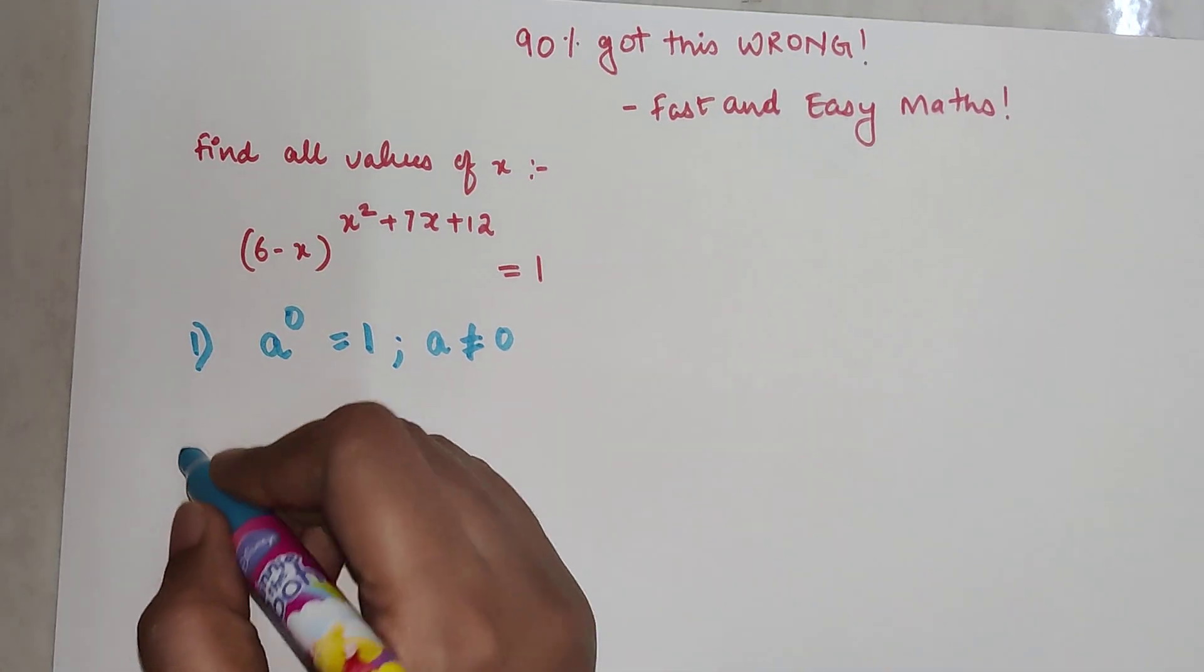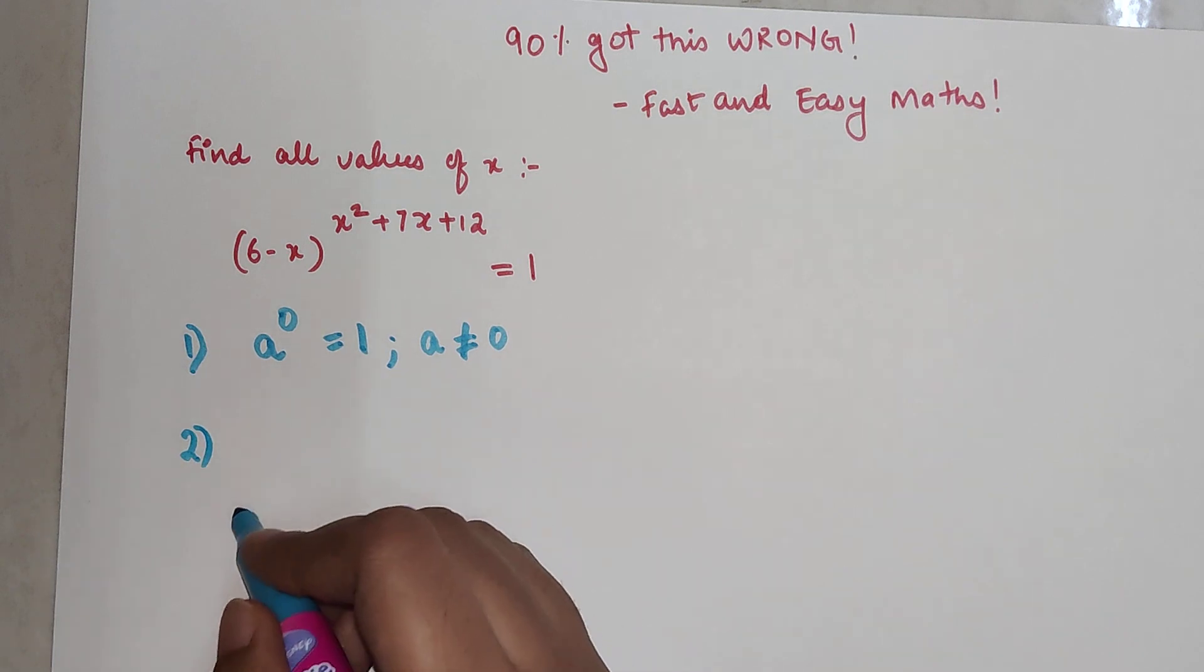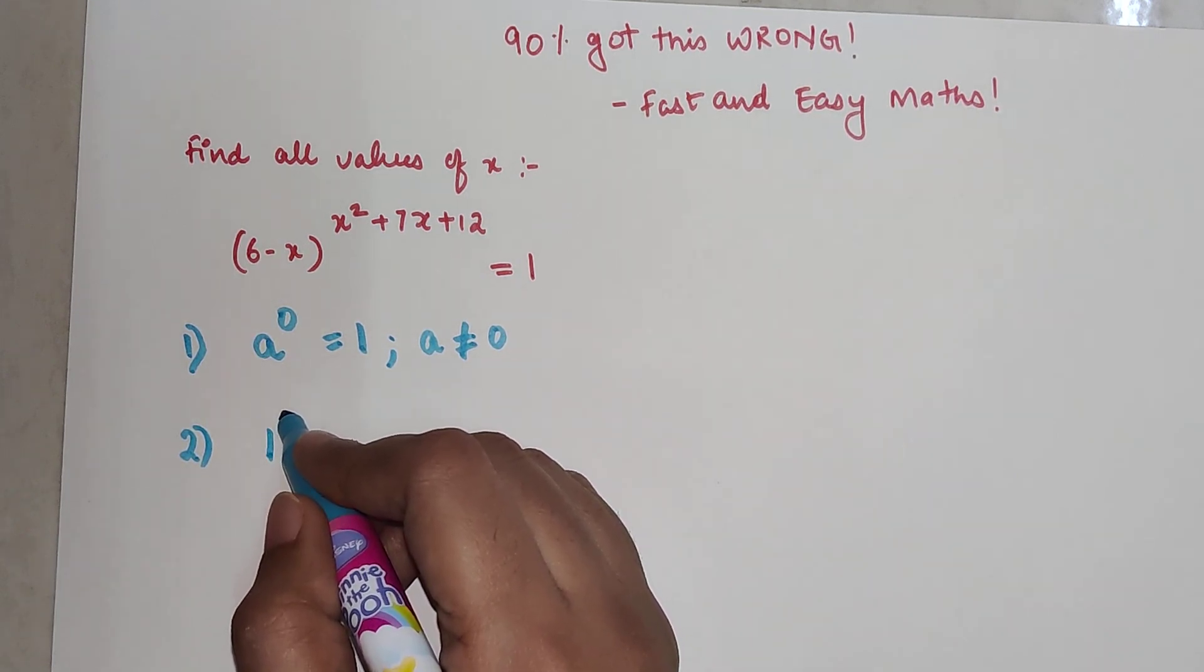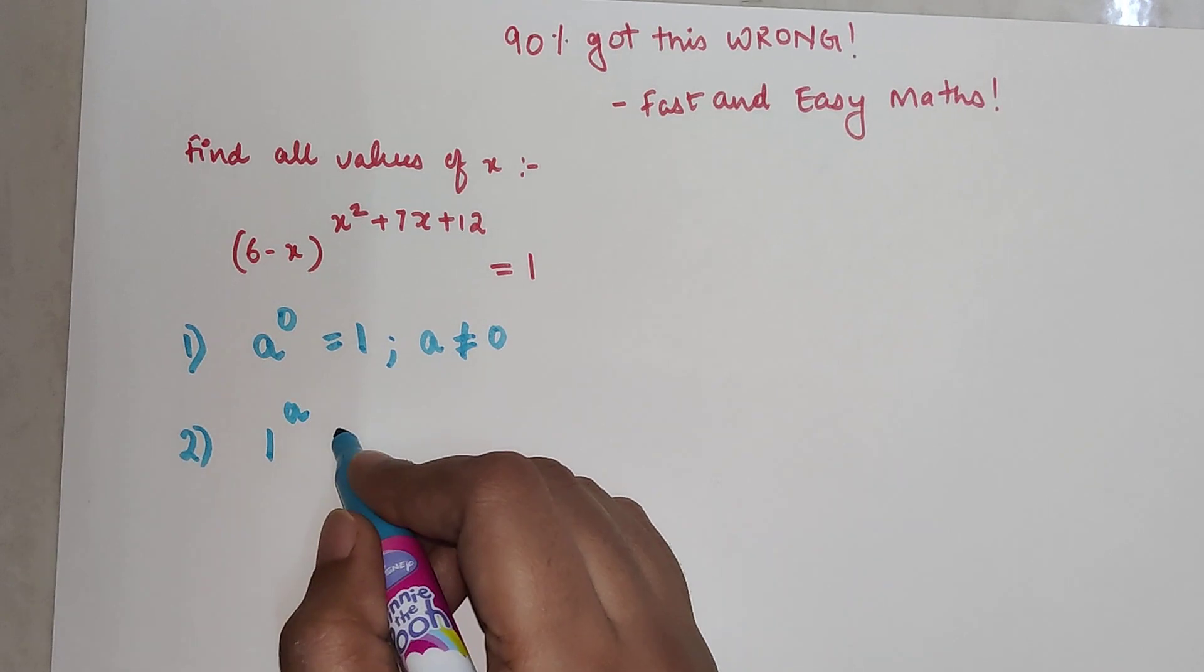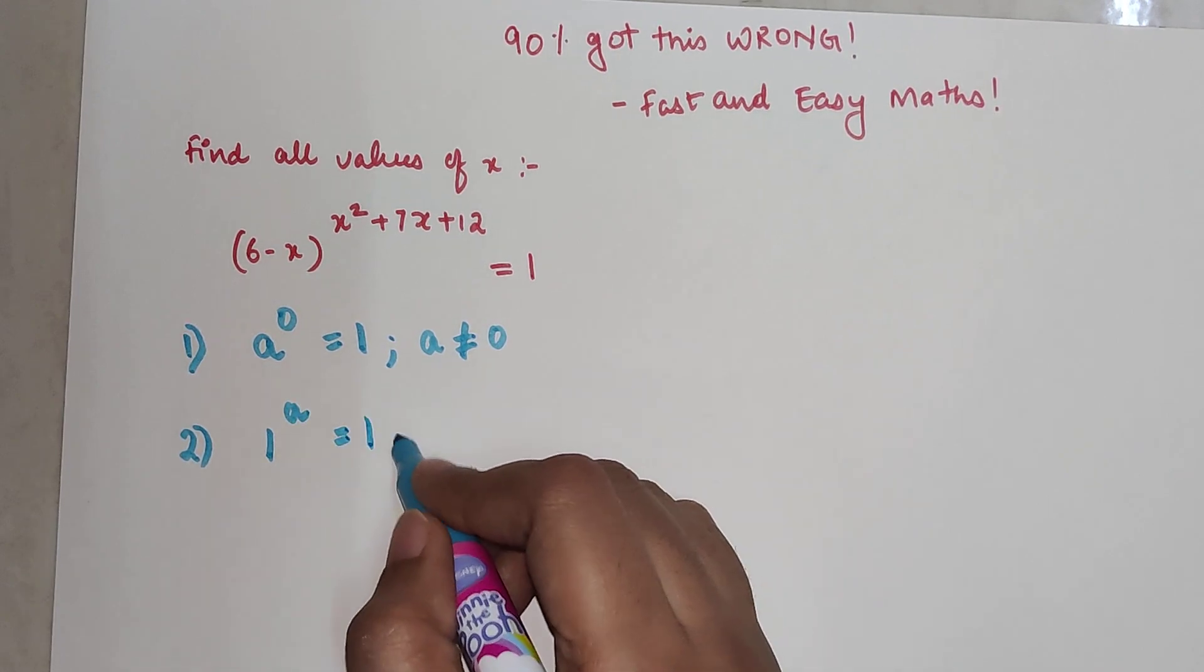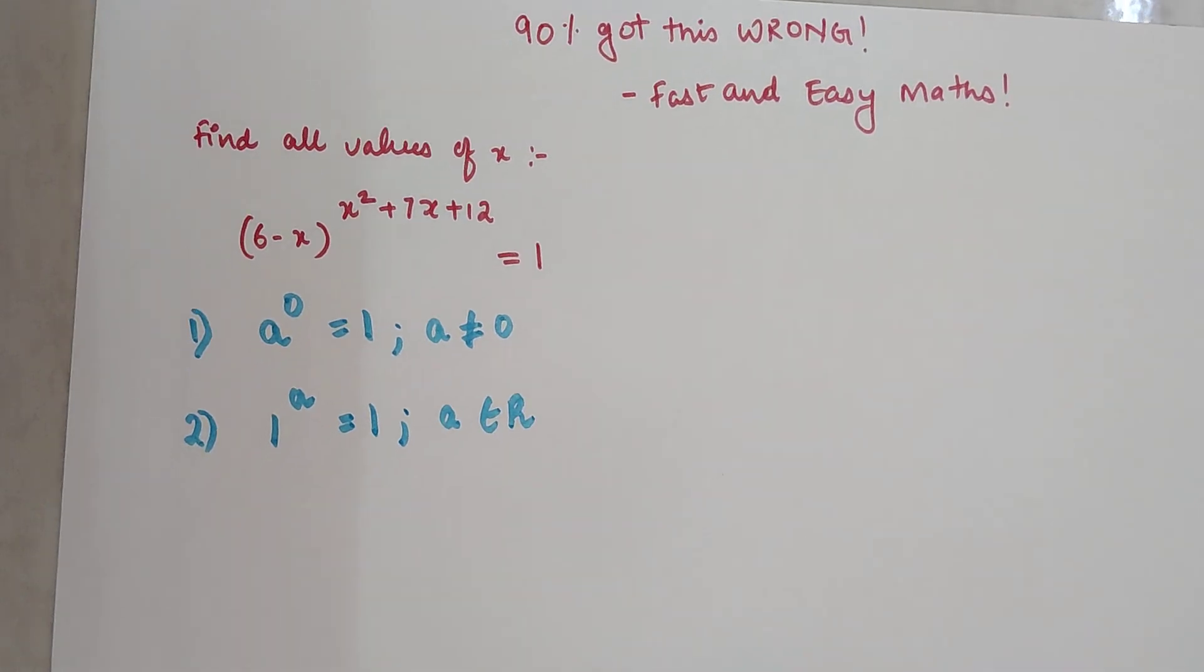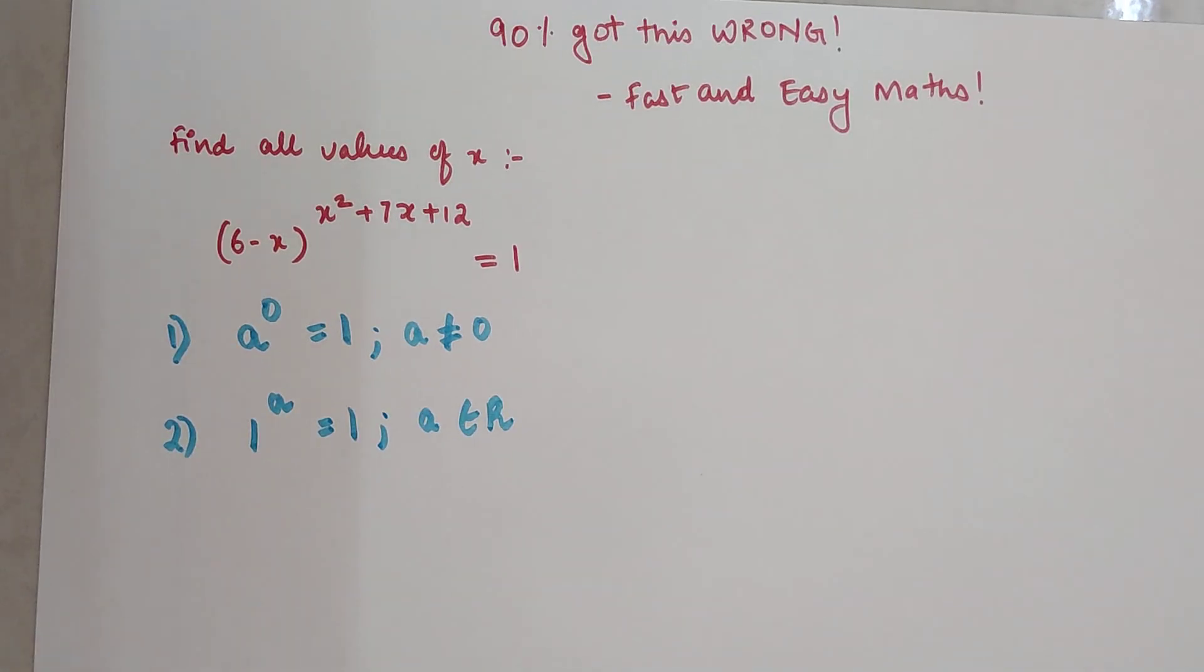Now in the second case, you take the base itself as one. One raised to any number, let's say a in this case, is always one, provided a is belonging to real numbers. Now there is a third case, but I will talk about it later.